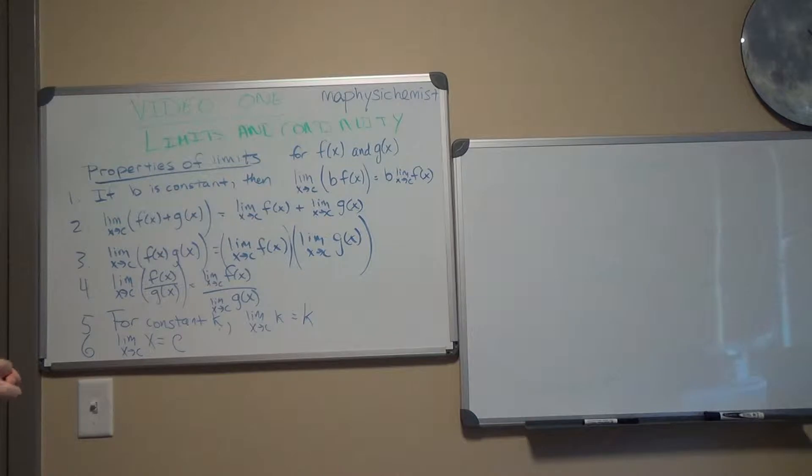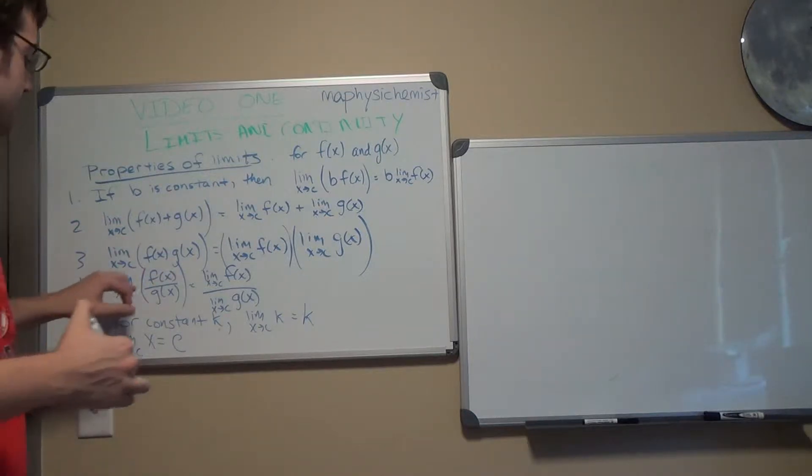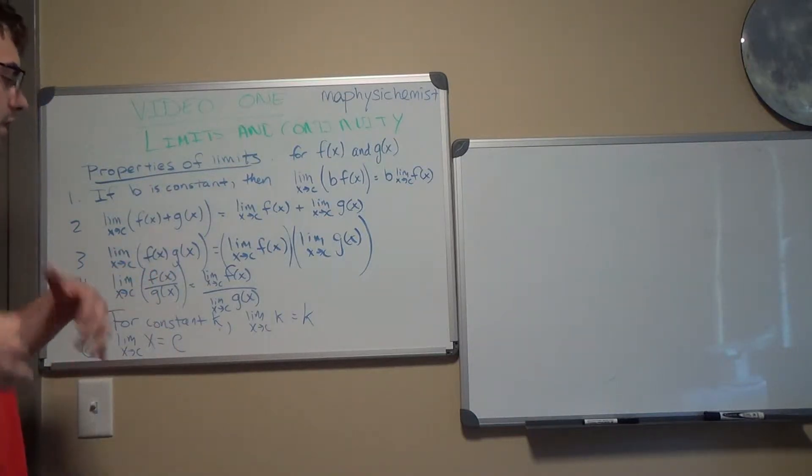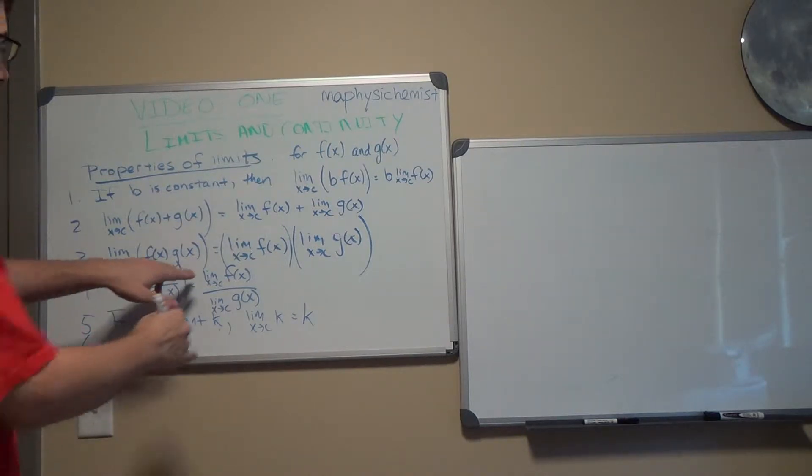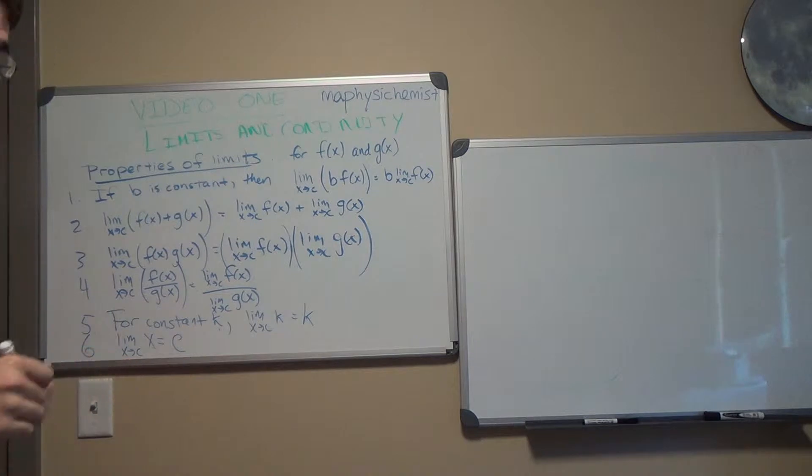And then the fourth type is division. You can divide f by g, and you can take the limit of that, and that's the same thing as taking the limit of f divided by the limit of g.